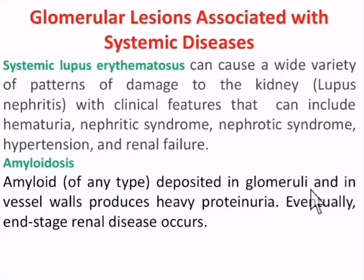Now we move to glomerular lesions secondary to systemic diseases, i.e., secondary glomerulonephritis. The first disease we will take is SLE — systemic lupus erythematosus — which is a systemic disease where patients develop auto-antibodies against double-stranded DNA.